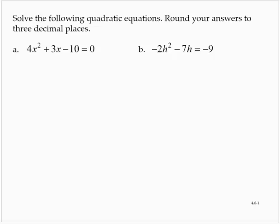Solve the following quadratic equations. Round your answers to three decimal places. All right, we're given 4x squared plus 3x minus 10 is equal to 0. So we're going to learn how to use a new tool to solve quadratic equations, and that is the quadratic formula.